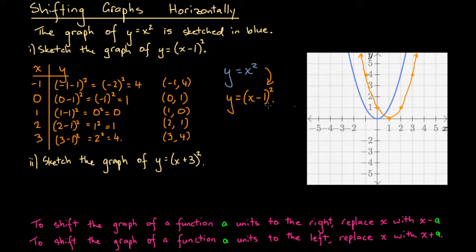To make this explicit: every point on the original blue graph is simply shifted 1 unit to the right to produce the orange graph. Each blue point corresponds to an orange point exactly 1 unit to its right. That's what we mean by shifting a graph 1 unit to the right — replacing y equals x squared with y equals (x minus 1) squared.